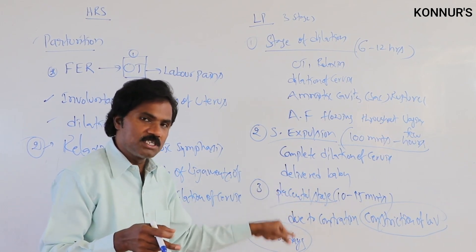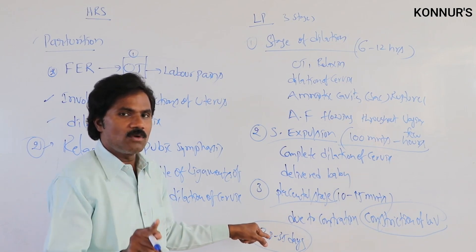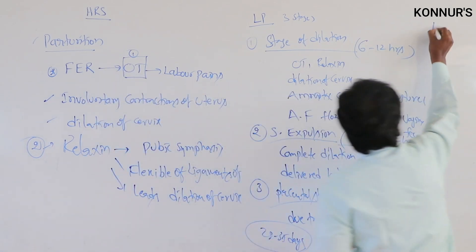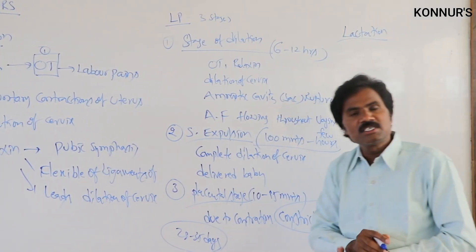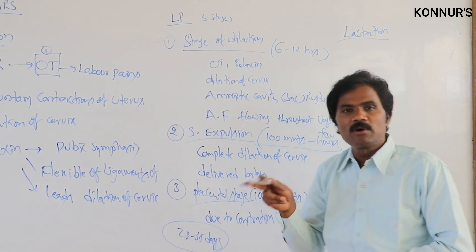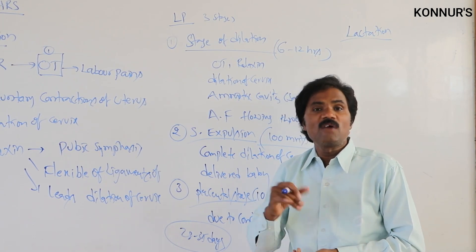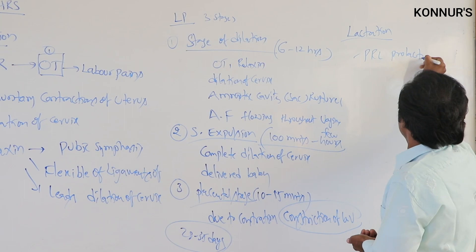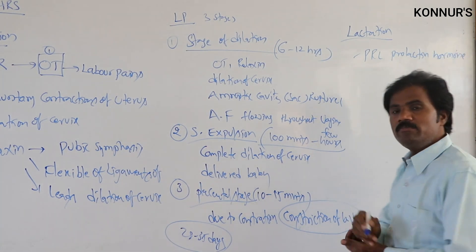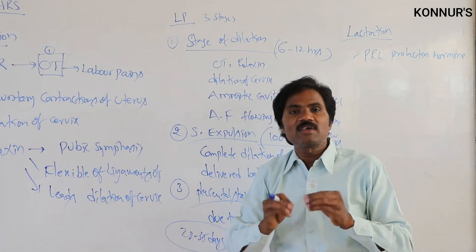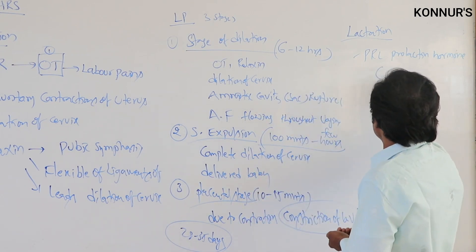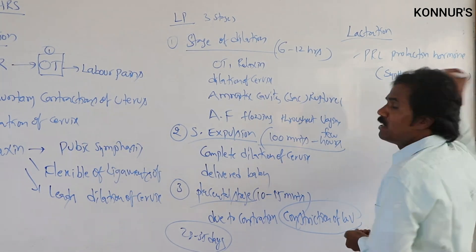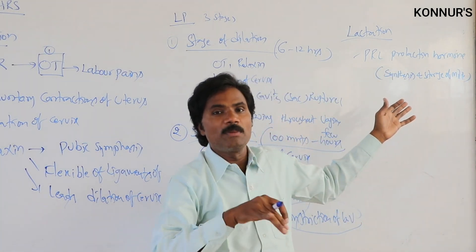After delivery, the next stage involves lactation. Mammary glands are prepared with the help of estrogen and progesterone from the age of puberty. After delivery, prolactin hormone — secreted by the anterior lobe of the pituitary gland — is responsible for the synthesis and storage of milk in the mammary glands.